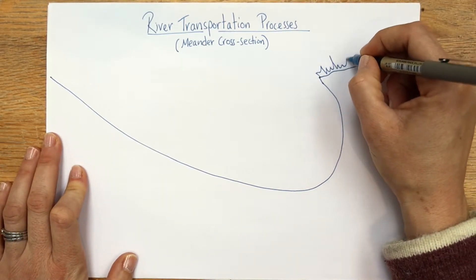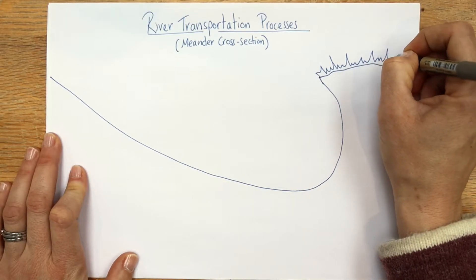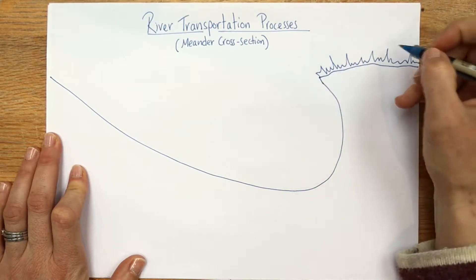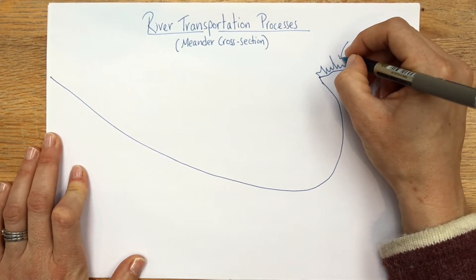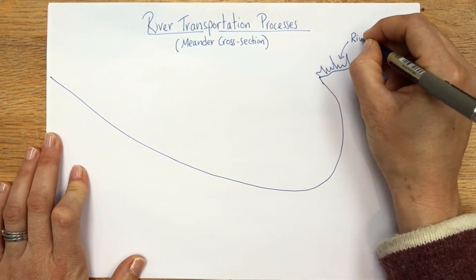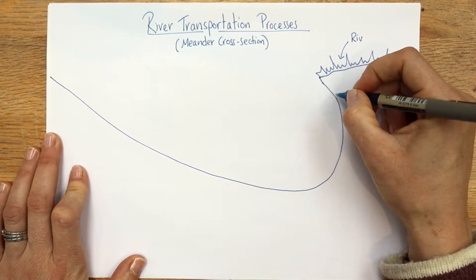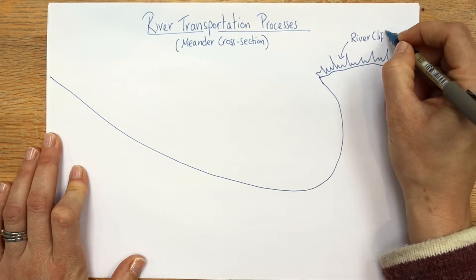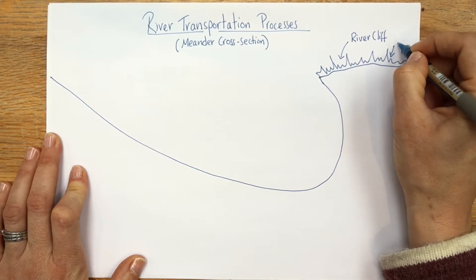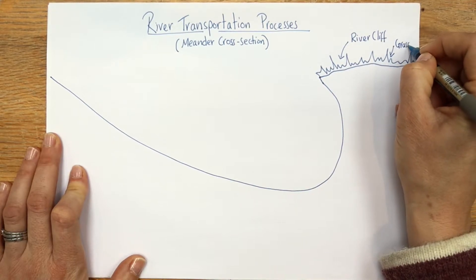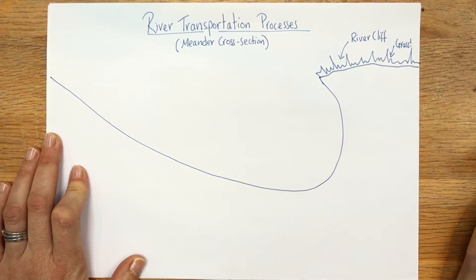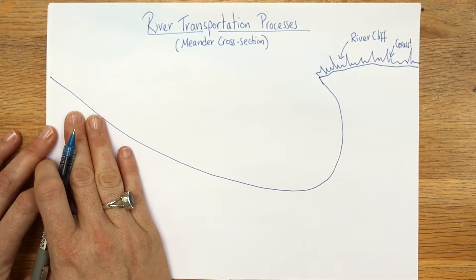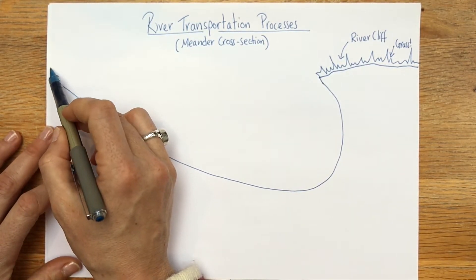Up here is the river cliff. This is kind of supposed to look like grass - it doesn't look massively like grass but go with it. Arrow this landform - you can see it's a bit of a cliff, you could kind of fall off it - this is known as the river cliff. And in case you didn't know, that was grass, I'll add a label.